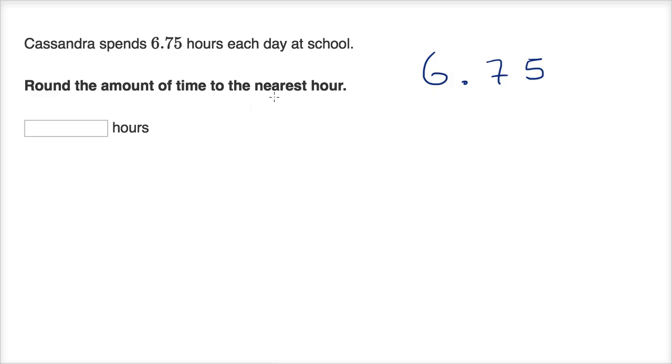You might be a little confused, because they're not saying round it to the nearest tenth, or hundredth, or one, or ten, or 100. They're saying to the nearest hour. But in this case, the hour is the ones place. So if we're going to round to the nearest hour, this is another way of saying round to the nearest one. We go one place to the right and look at the tenth place.